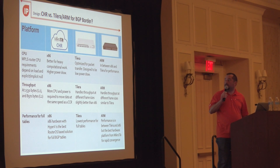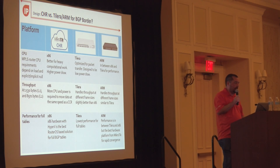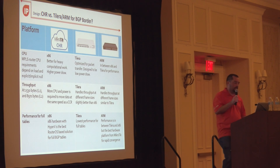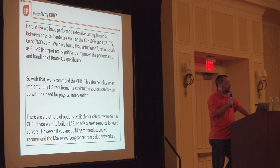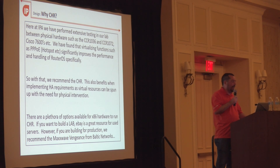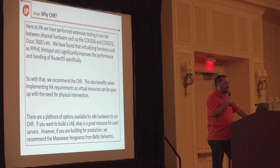We've done pretty extensive testing on the CHRs and on the CCRs when it comes to aggregating — whether it be PPPoE, IPsec tunnels, or all sorts of other stuff. We've generally found that the CHR is the preferred method to go, and it gives you more flexibility as well. If you've got a virtual environment you can spin up an HA environment pretty quickly.